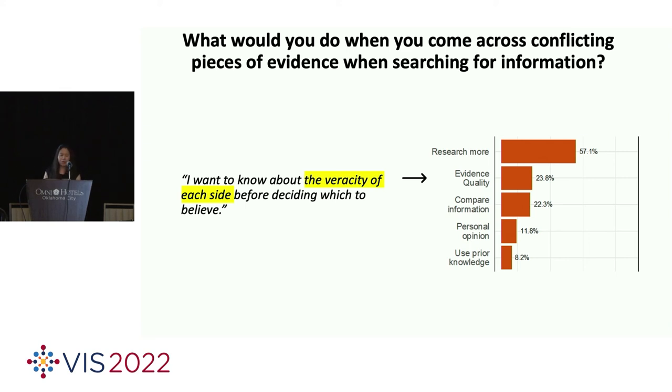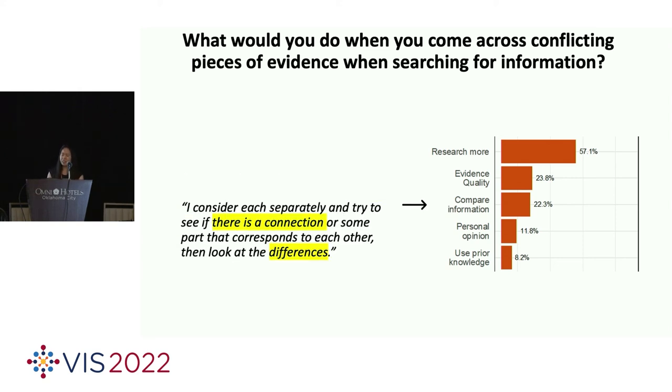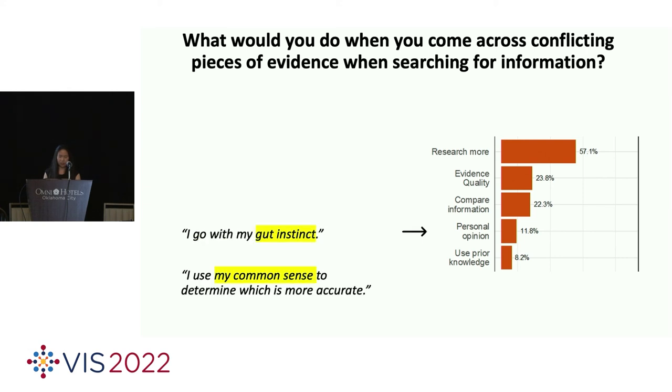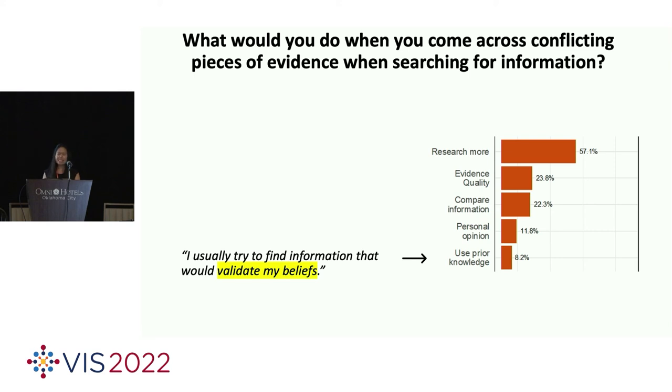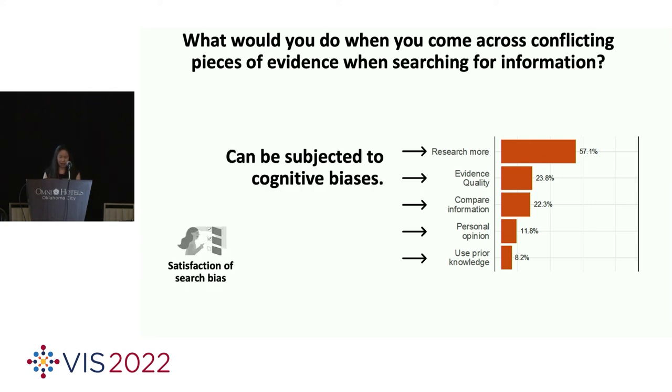This participant wrote, I want to know about the veracity of each side before deciding what to believe. Some will even compare information across multiple sources. This participant wrote, I consider each separately and try to see if there's a connection or some parts that correspond to each other and then look at the differences. However, some will rely on their gut instinct or common sense and some will seek out information that validates their beliefs. And you can see all these strategies can be subjected to cognitive biases such as satisfaction of search bias or confirmation bias or recency bias among many others.